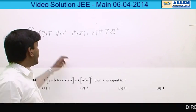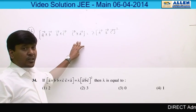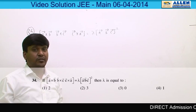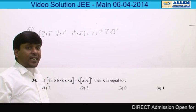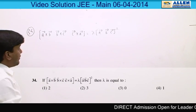Question number 34 is a well-known identity: A cross B, B cross C, C cross A box equals ABC box square. So we can directly calculate the value of lambda, but if we are opening this...